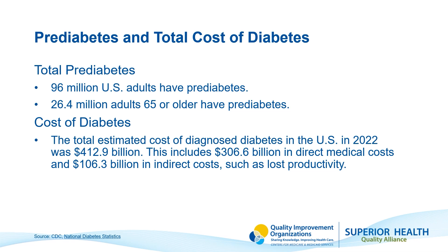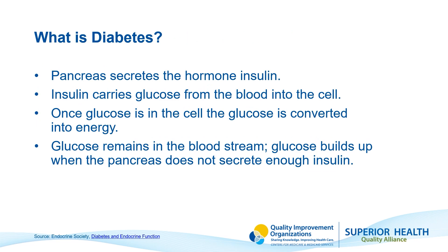Diabetes is a chronic disease that occurs when the body doesn't produce enough insulin or can't use it properly. In a functioning body, the pancreas produces and releases insulin and glucagon. These hormones regulate your blood sugar levels by taking glucose from your blood and moving it into your cells, where it can be converted into energy. If glucose remains in your bloodstream, it can build up. When a person has diabetes, the pancreas's ability to produce and regulate insulin is impaired.